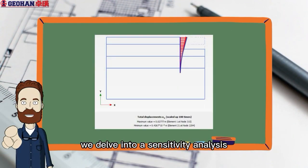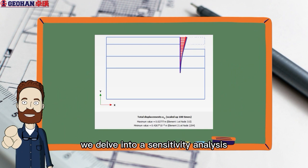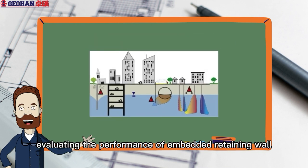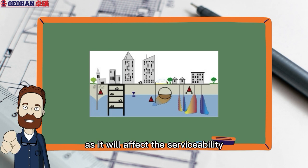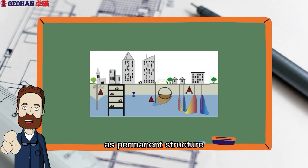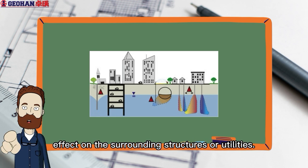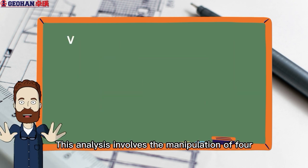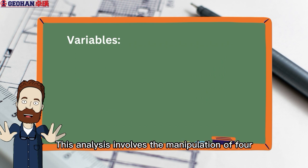Within this section, we delve into a sensitivity analysis focused on the lateral displacement of the CBP wall. The lateral displacement is crucial in evaluating the performance of embedded retaining wall, as it will affect the serviceability behavior of the wall as permanent structure and detrimental effect on the surrounding structures or utilities.